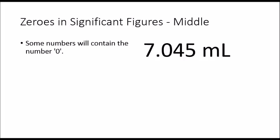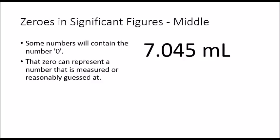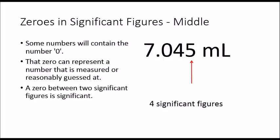Now sometimes there are zeros in numbers that we've measured. The zero can represent a number that has been measured or reasonably guessed at. A zero between two significant figures is significant. Here, 5 represents the last number that we wrote down—it is where all our error is—so we have 4 significant figures.